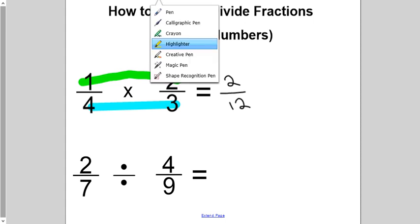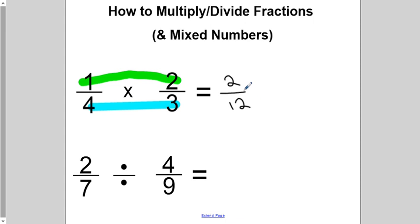And then, as always, I shouldn't have to tell you, we can make sure that we simplify the fractions. And we can divide both of these, in this instance, by 2. And so, 1 sixth is our final answer. That's all multiplication is.